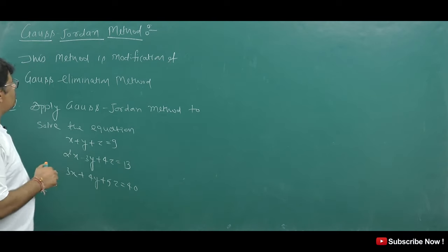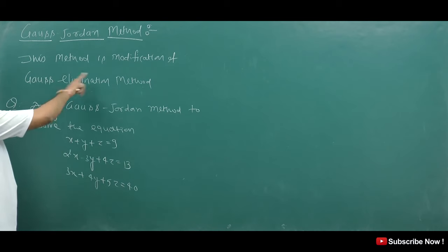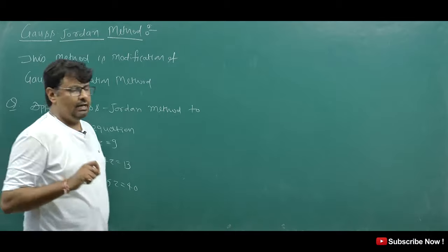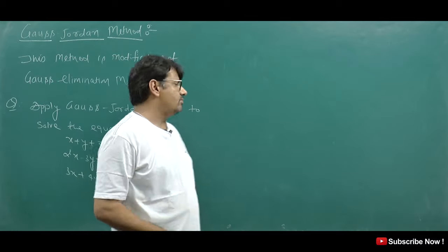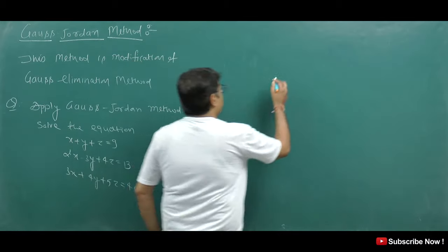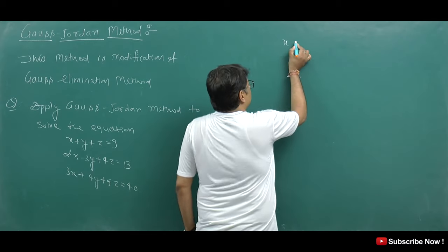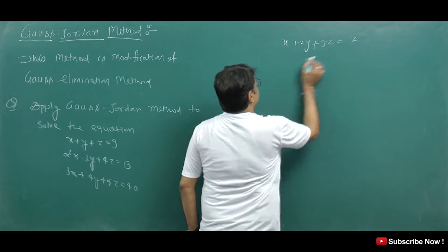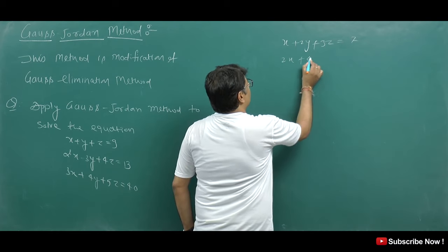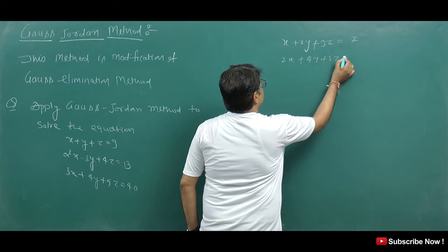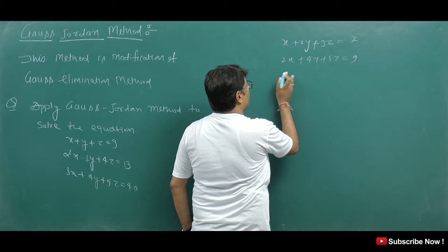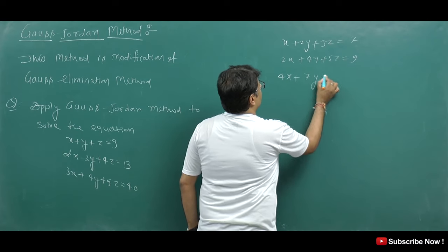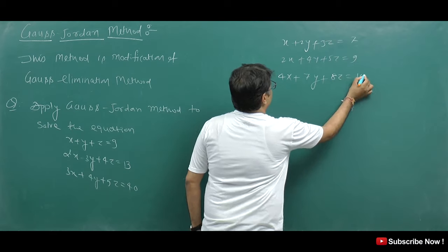So students, what is the Gauss-Jordan Method? This method is a modification of Gauss Elimination Method. To explain it, let's take some equations: x plus 2y plus 3z is equal to 7, and 2x plus 4y plus 5z is equal to 9, and 4x plus 7y plus 8z is equal to 10.